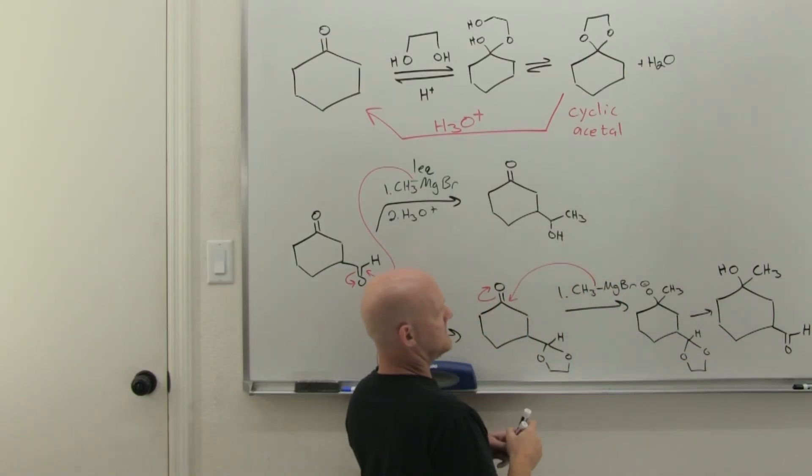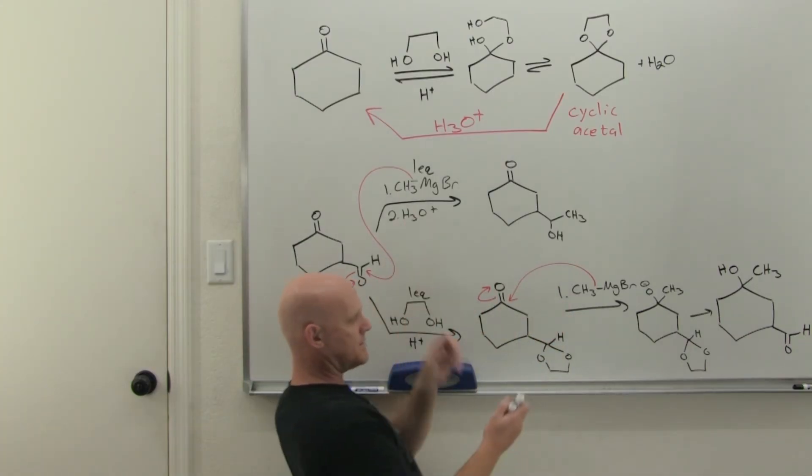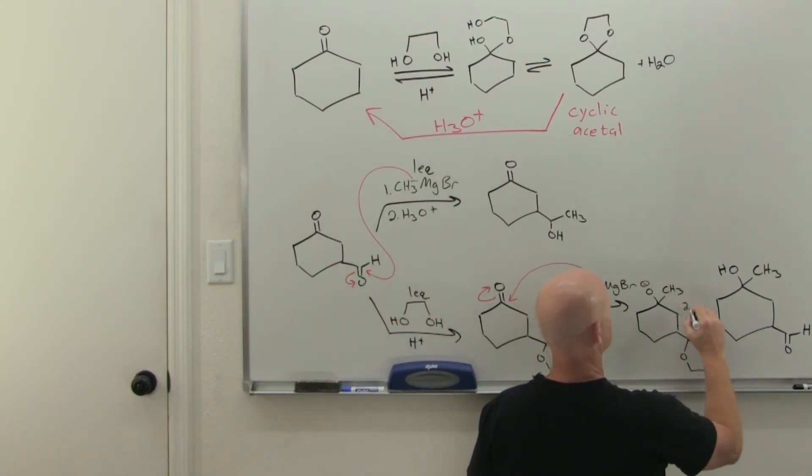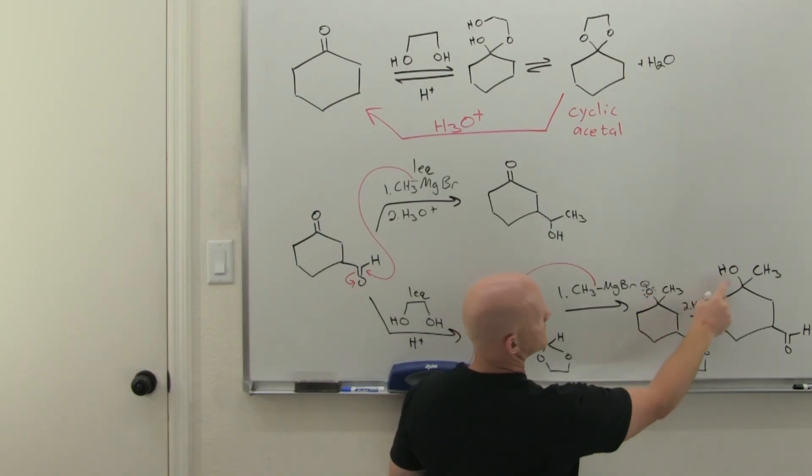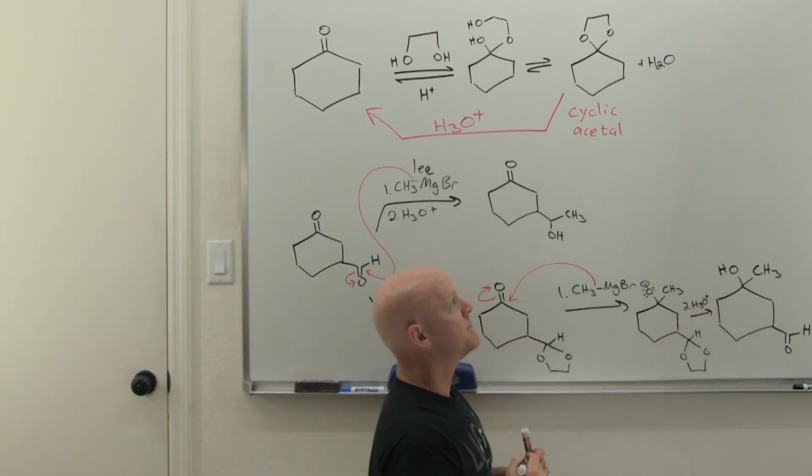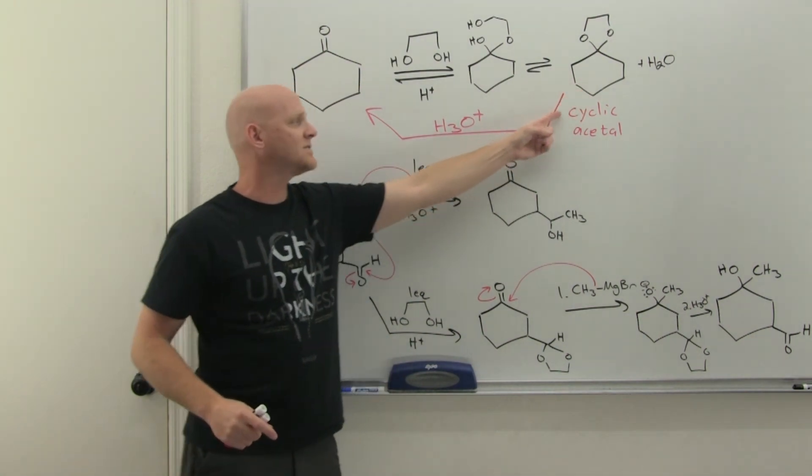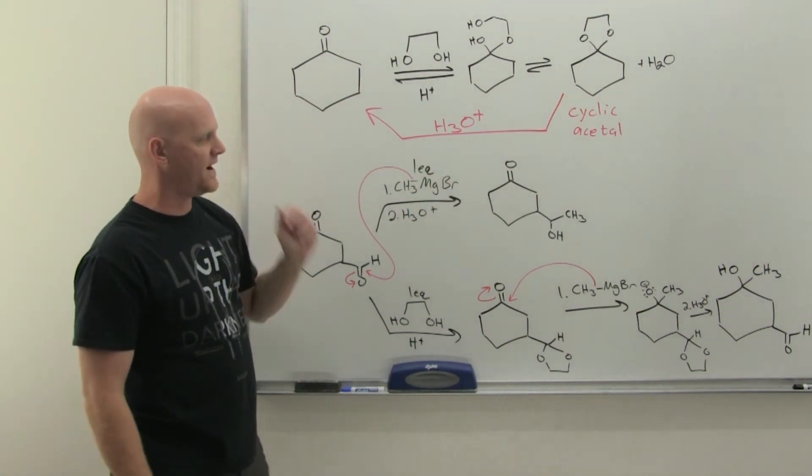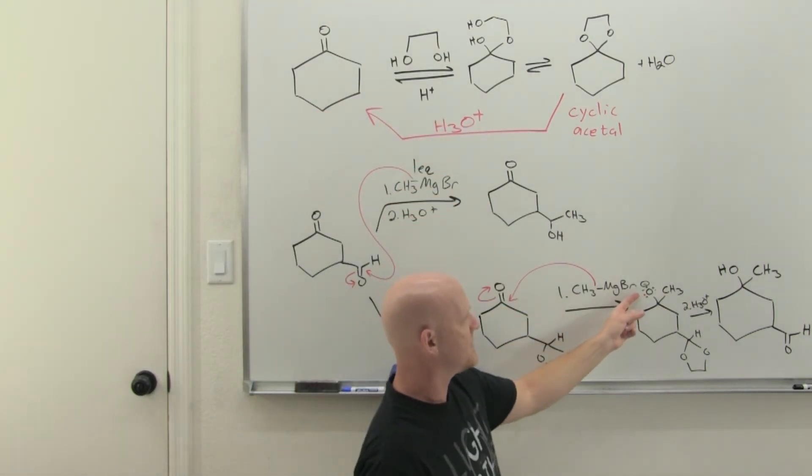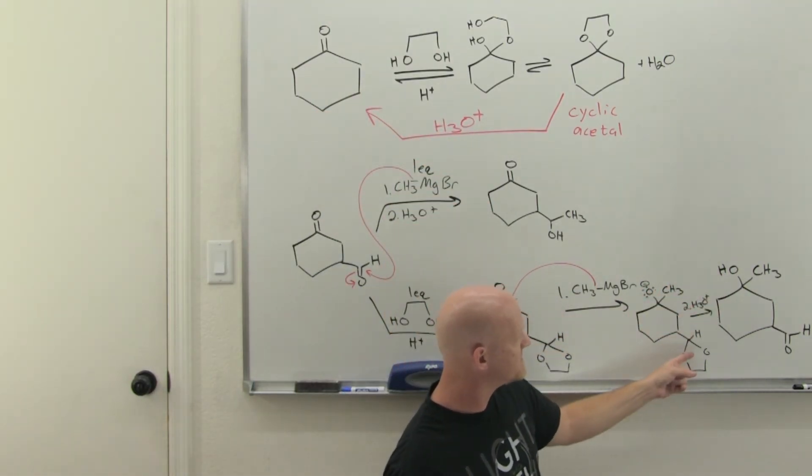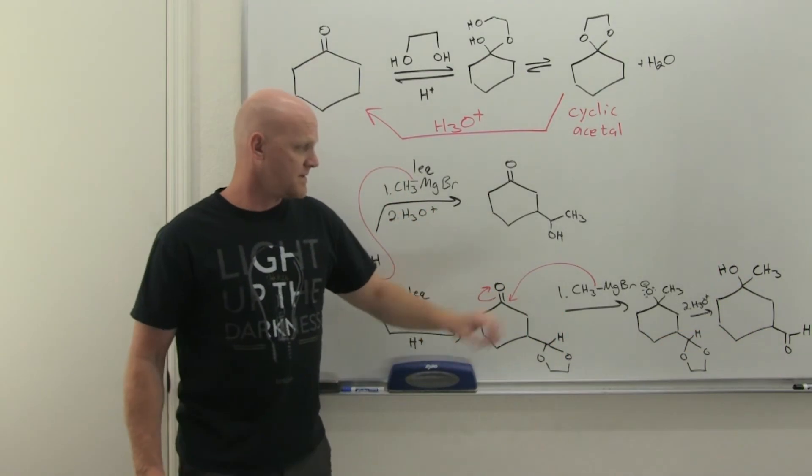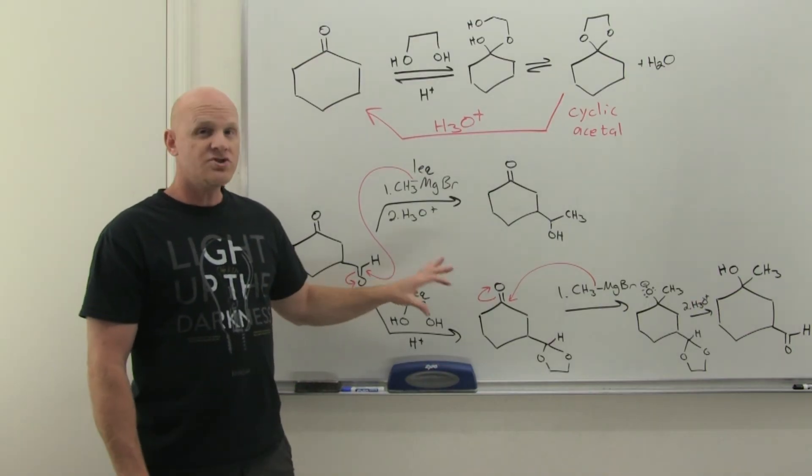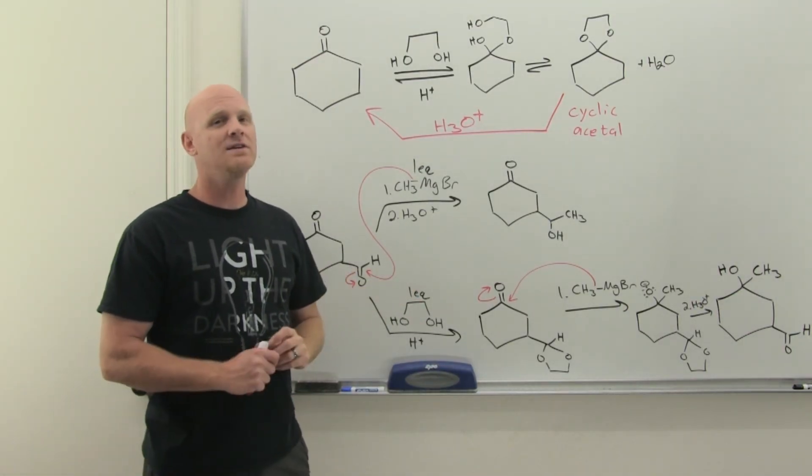And you might recall that typically we follow up our Grignard again with an acid workup step. So we're going to add H3O+. And that H3O plus is going to serve two purposes here. It's going to protonate here, this alkoxide, to turn it into an alcohol. That's going to happen. But recall that it's H3O plus that converts your cyclic acetal back into a ketone or aldehyde. And so that's going to serve both purposes here. Protonates the alkoxide to get it to an OH, but also removes the protecting group back off, converting it back into an aldehyde. And we've now formed our product.